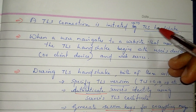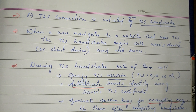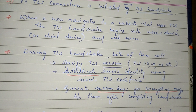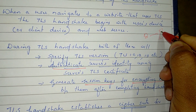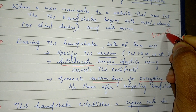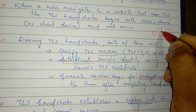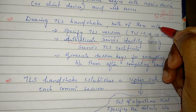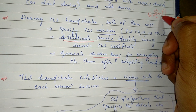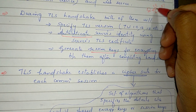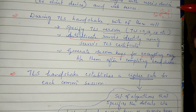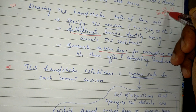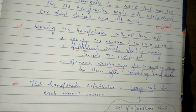In summary, the TLS handshake involves: confirming the version number, authenticating via certificate, generating session keys, selecting a cipher suite for encryption algorithms and keys, and ensuring authentication and integrity via MAC. This completes the overview of TLS.